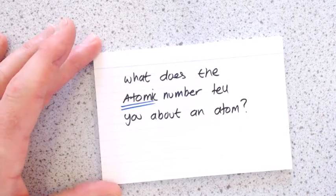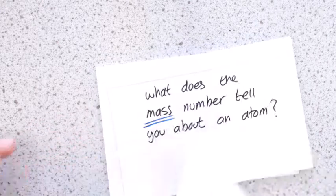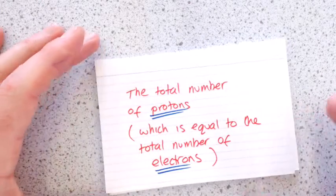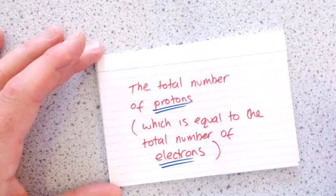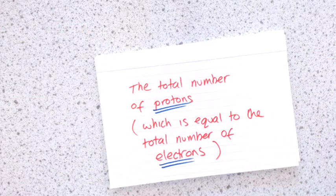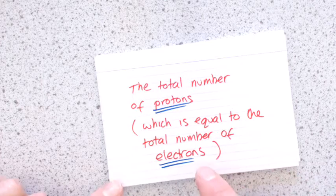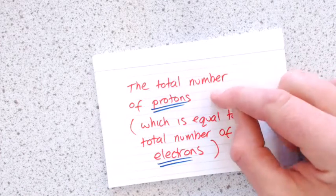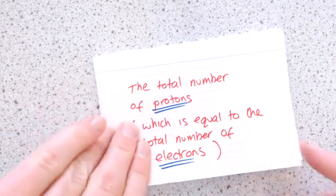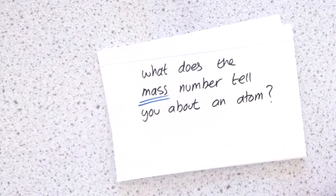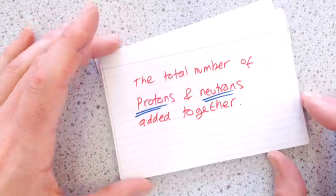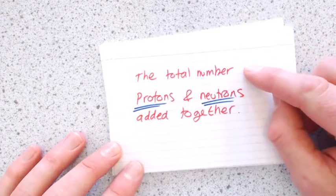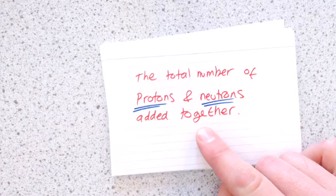So what do those numbers tell you? What does the atomic number tell you about an atom? So what it actually tells you is the total number of protons. But because all atoms are neutral, it also tells you how many electrons you've got. So every proton that's positive has an electron that's negative. What does the mass number tell you about an atom? Mass number tells you the total number of protons and neutrons added together.